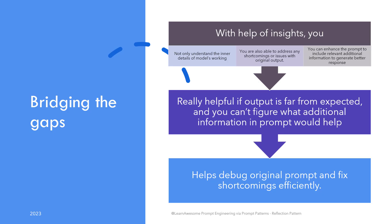With the available output, you not only understand the inner details of how models generate responses, you're also able to address any shortcomings or issues with the default answer by incorporating this additional information to refine your prompt. You are also better able to gauge the accuracy of the response. This is an excellent tool if you're not getting the expected output and know you need to refine your prompt, but aren't sure what changes would lead to expected results.